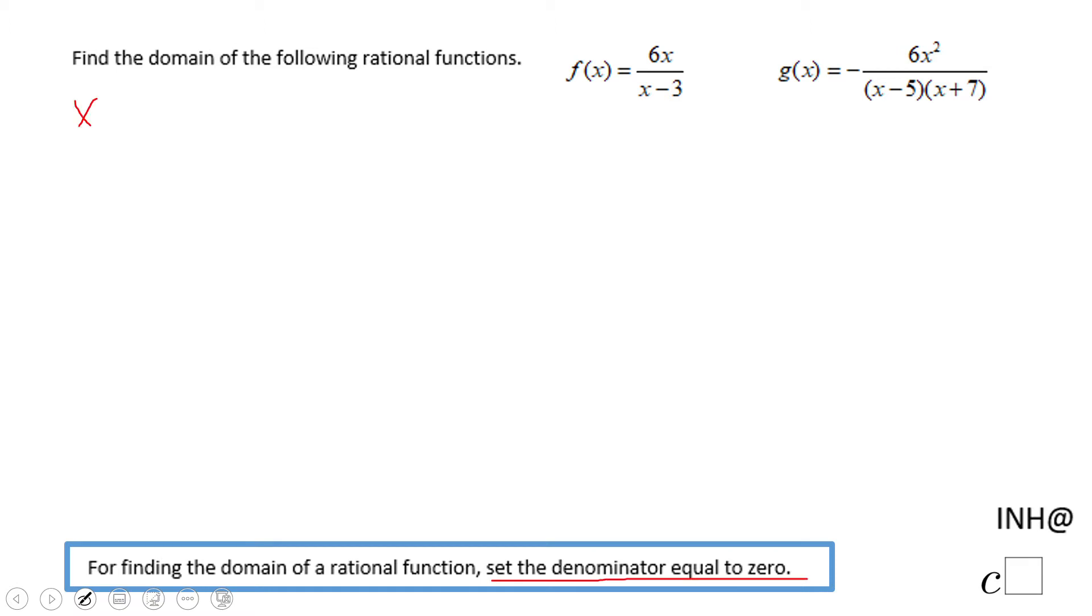So I'm going to take that x minus 3, make it equal to zero, and I'm going to get x equals 3. In this moment you can just cross the equal sign and that means x cannot equal 3. The domain of this rational function f of x is any real number but 3.